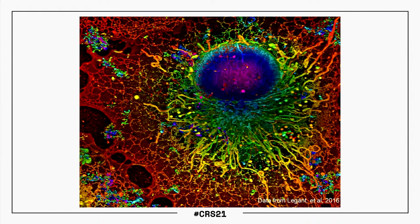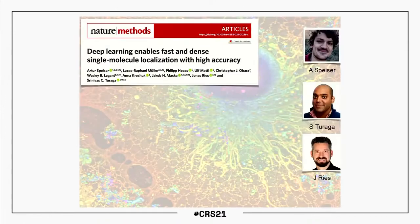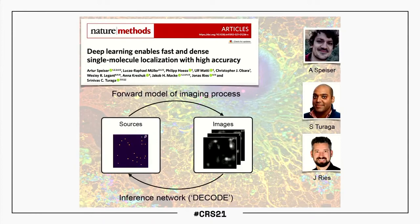I want to give two extreme examples. One is an application to nanoscale imaging. This is an image obtained using single-molecule localization microscopy — a technique that heavily relies on inference algorithms because you take multiple measurements of a sparsified image and computationally have to extract the sources and combine them together. We phrased this as a simulation-based inference problem, and this is joint work with Trini Turaga's group at Janelia and Jonas Ries' group in Heidelberg, with Anne Kreschuk also part of the collaboration. The primary work was carried out by Arthur Speiser, a graduate student in the group.